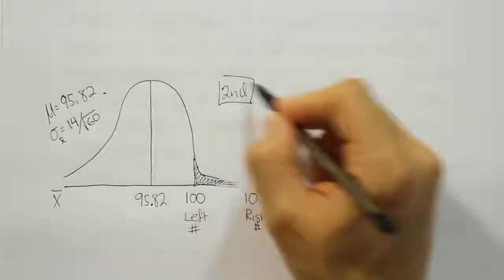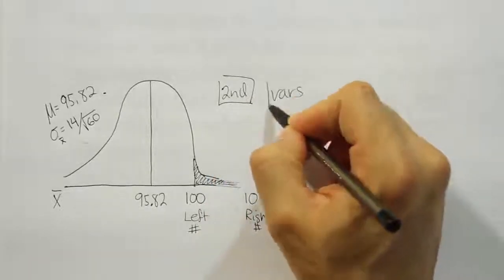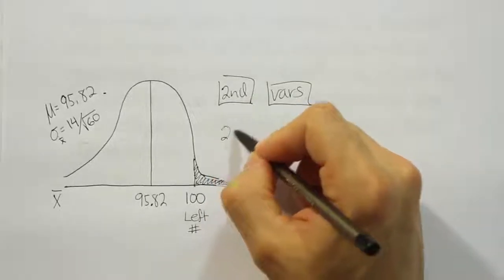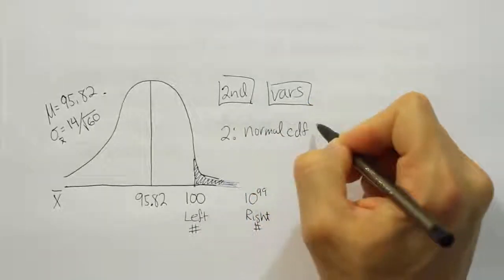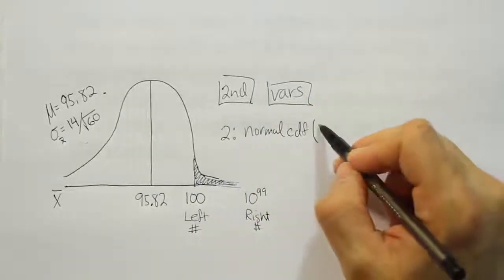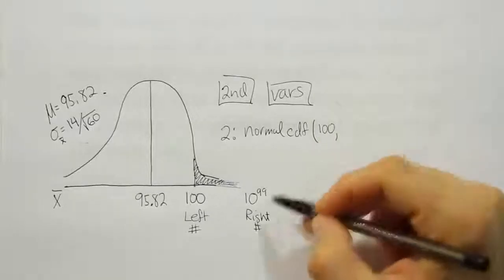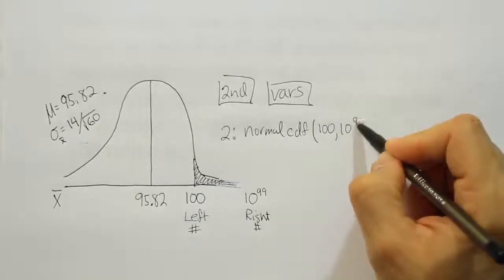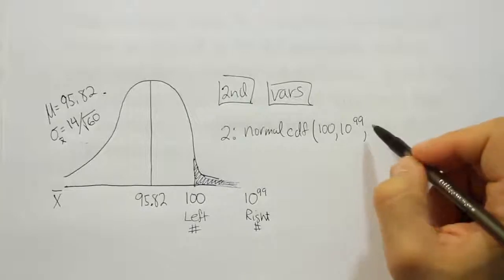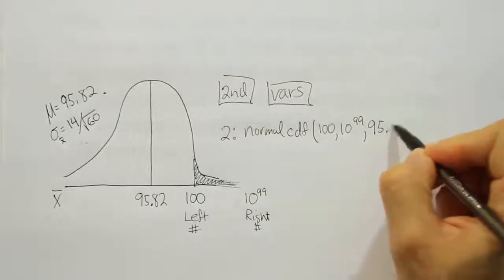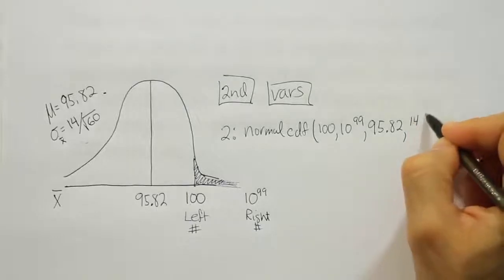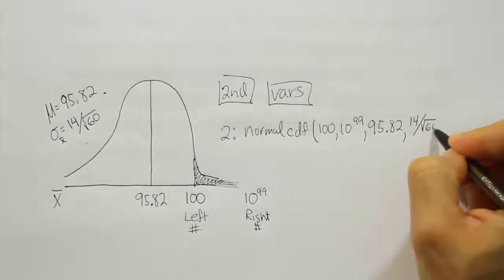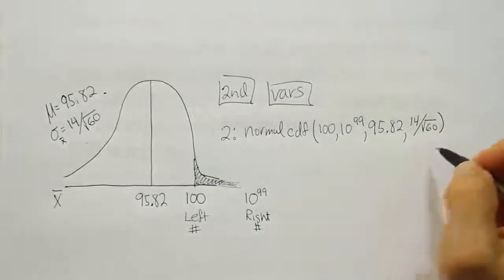We'll have second, we'll have vars. Then from there we're going to enter in option number 2 which is normal CDF. And then here's what we're going to do: the left number will be 100, comma the right number which is 10 to the 99th power, comma the mean which is 95.82, comma the standard deviation which is going to literally be 14 divided by the square root of 60. We can enter it in the calculator just like that.